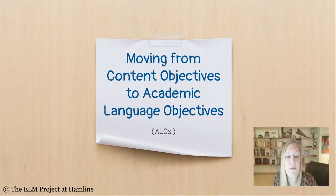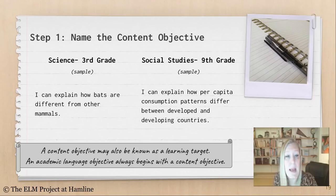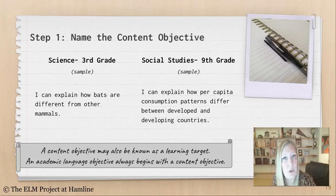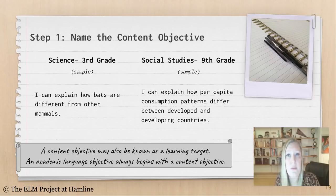Moving from content objectives to academic language objectives, or ALOs. The first step in coming up with an academic language objective is naming the content objective. An example from a third grade science class: 'I can explain how bats are different from other mammals.' An example from a ninth grade social studies class: 'I can explain how per capita consumption patterns differ between developed and developing countries.' An ALO always begins with and grows out of the content objective.